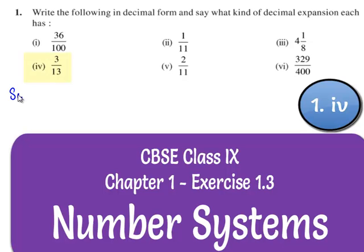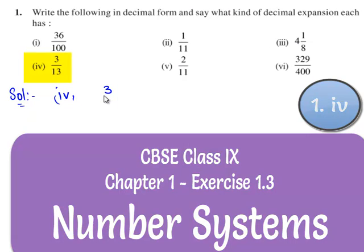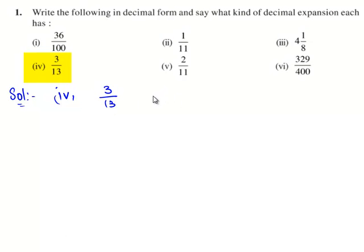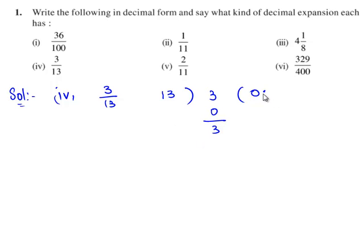Now let us move on to the fourth bit. Here we need to find the decimal expansion for 3 upon 13. So we divide 3 by 13. Since 13 does not go in 3, we take 0. So 13 times 0 is 0 and we are left with remainder 3. Since 13 does not go in 3 again, we take a decimal point. 3 becomes 30 and 13 goes in 30 two times, so 13 times 2 is 26.